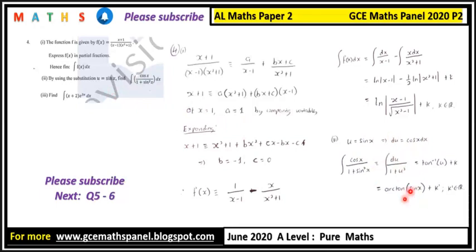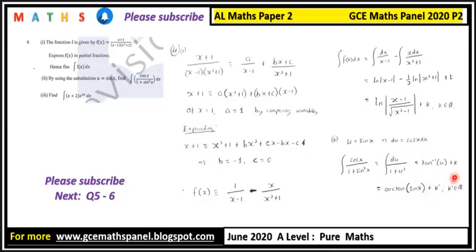From standard formulae, the integral of one over (one plus u squared) du is arctan u. So the result is arctan u plus k. Since u equals sine x, substituting back gives arctan(sine x) plus k prime, where k prime is an element of the real numbers.